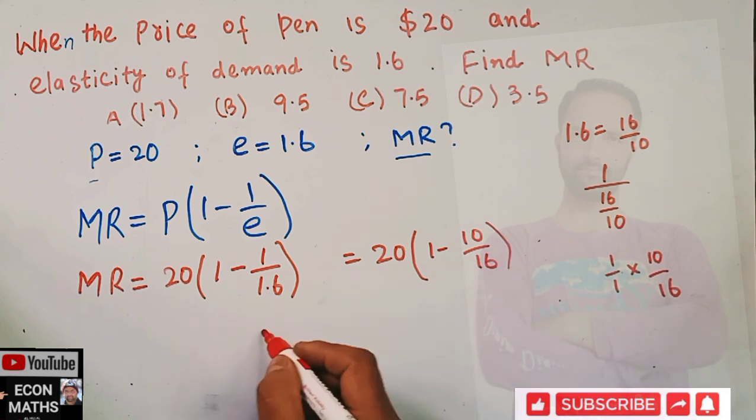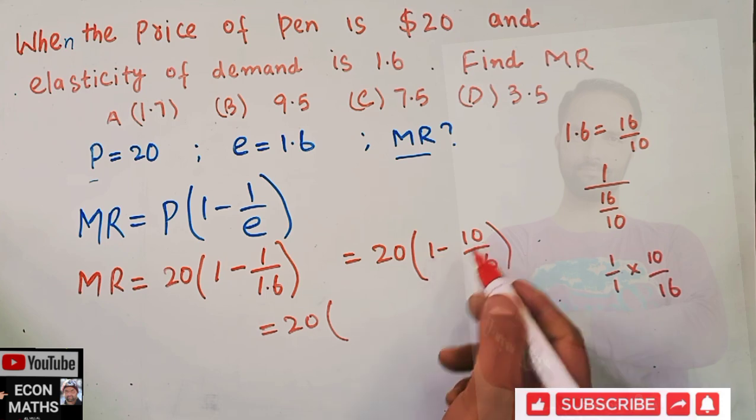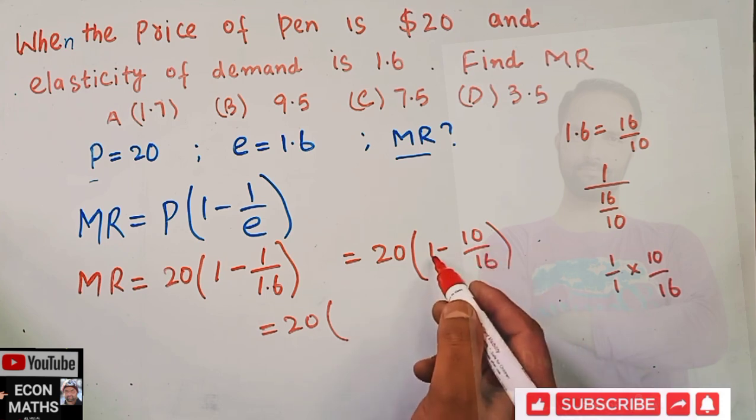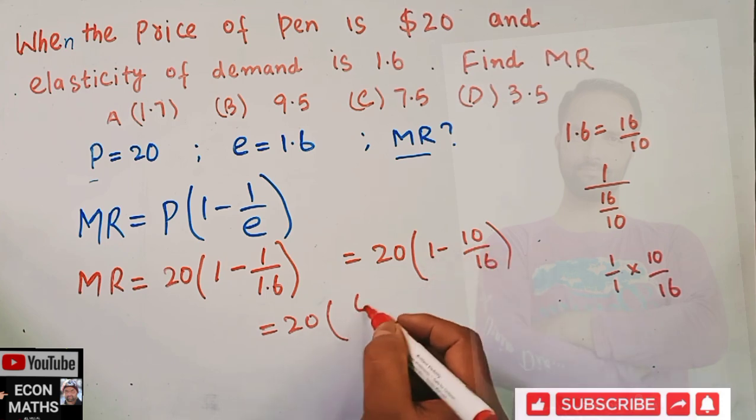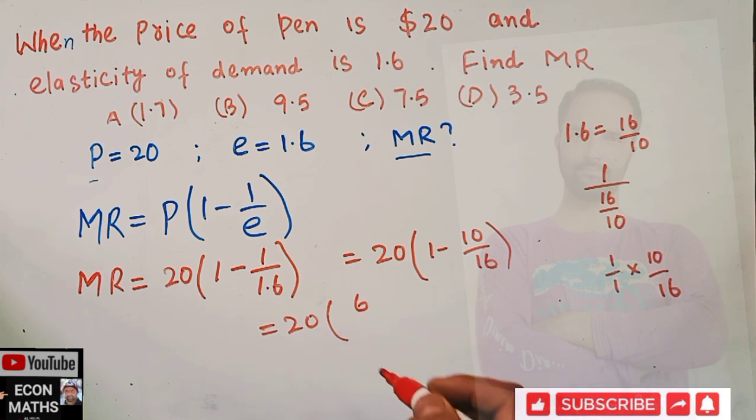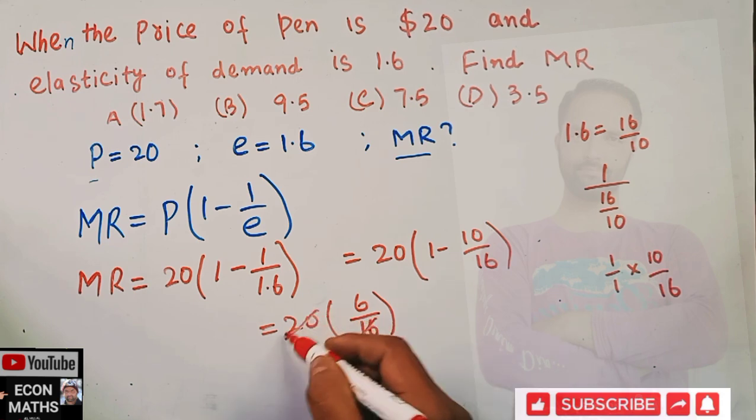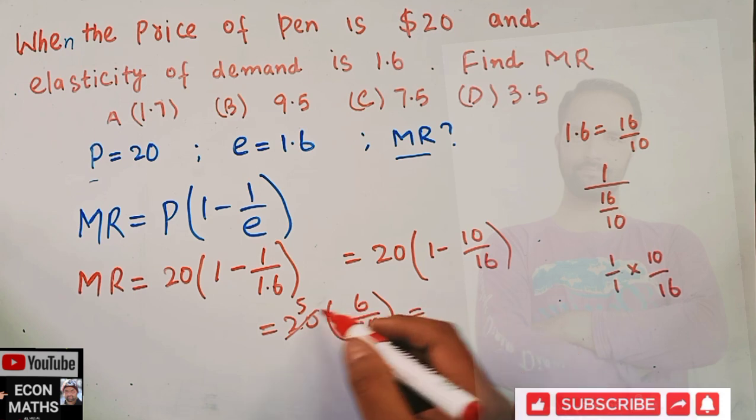So we have 20 times 6 upon 16. Now, 4 times 4 is 16, 4 times 5 is 20, 5 times 6 is 30.